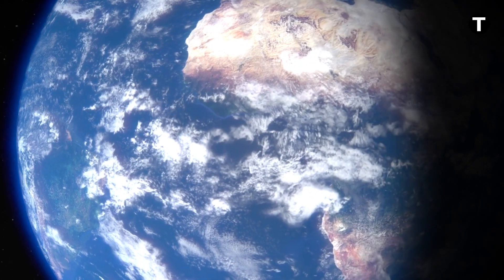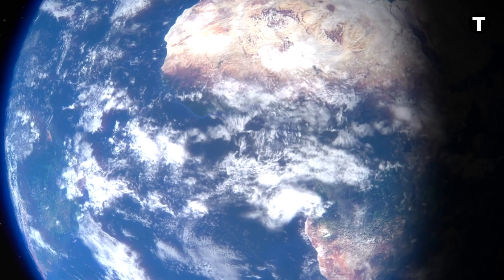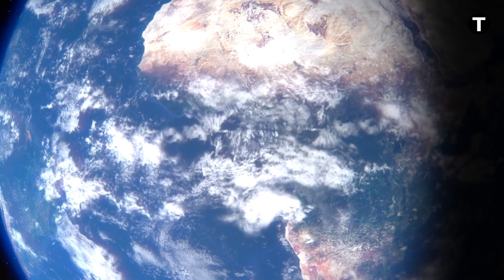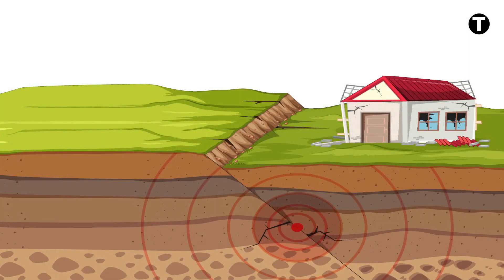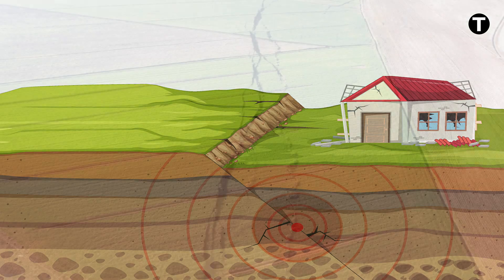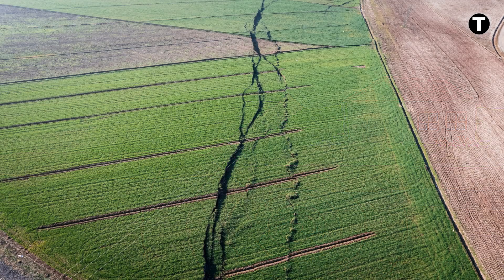Our adventure begins by understanding what causes earthquakes. An earthquake is the result of a sudden release of energy in the Earth's lithosphere. This energy can be unleashed in four different ways. First, through the rupture of a fault or fault segment, known as tectonic earthquakes. These are the most common type.